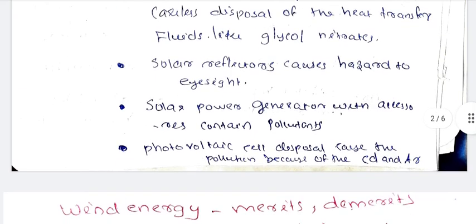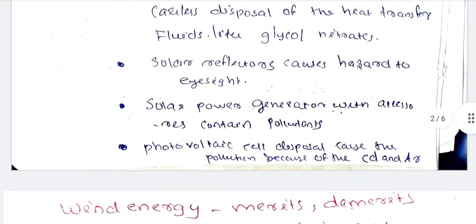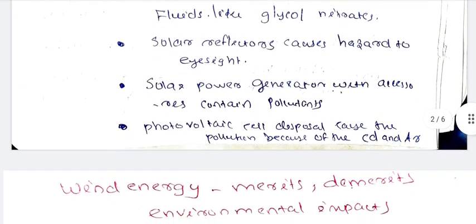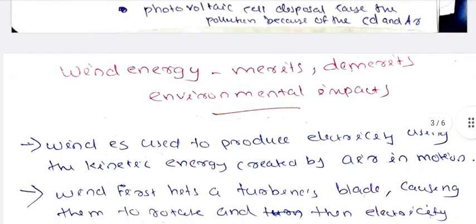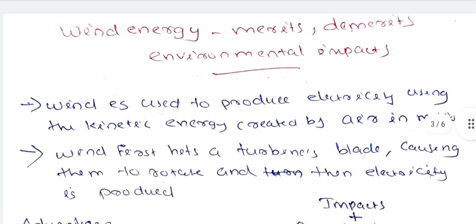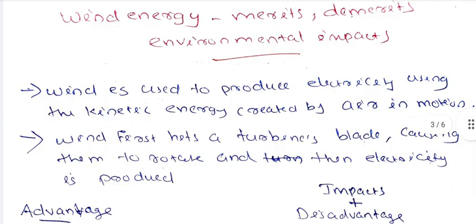That is why it has environmental impacts. Next is wind energy. Wind energy is used to produce electricity by using the kinetic energy created by air in motion.